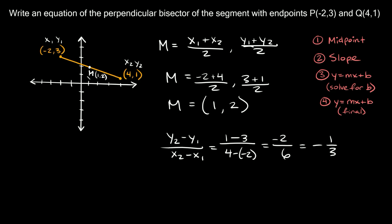Now to find the slope of the perpendicular bisector — the perpendicular bisector is a line that intersects the original segment at a 90-degree angle, something like this. To find its slope, all you do is find the opposite reciprocal of the slope we just found.